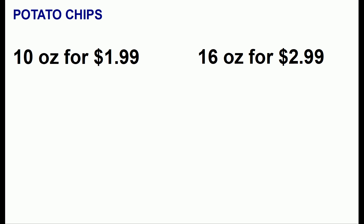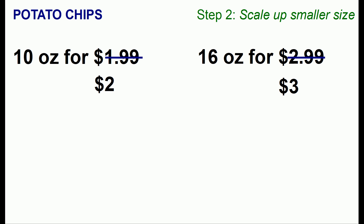In a third example, let's say you have 10 ounces of potato chips for $1.99 or 16 ounces for $2.99. Which is cheaper? We'll first go ahead and round the numbers. Then we'll try scaling up the smaller size. If we buy two packages of the 10-ounce potato chips we'll end up with 20 ounces for $4. Unfortunately, unlike our other examples, neither the quantity nor the dollar amounts match, so we cannot directly compare 20 ounces versus 16 ounces. We're going to need to do something different.